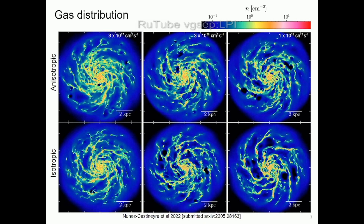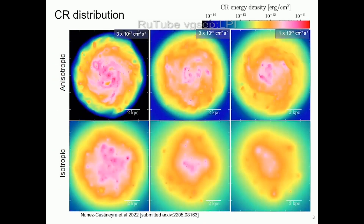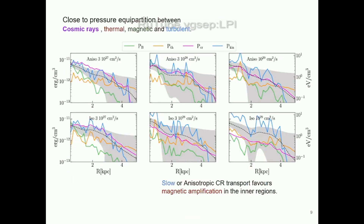Here are six galaxy simulations showing the gas density. On top are the three anisotropic diffusion simulations and the three isotropic ones on the bottom, with the kappa parameter growing toward the right up to 10^29. Overall, the gas distributions look more or less the same with small differences. Looking at the cosmic ray distribution, anisotropic diffusion produces structure following the galactic arms, while higher kappa — higher diffusivity — washes out these structures.